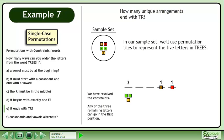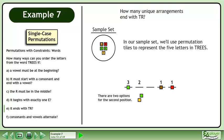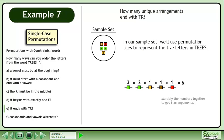We have resolved the constraints. Any of the three remaining letters can go in the first position. There are two options for the second position, and one option for the third position. Multiply the numbers together to get six arrangements.